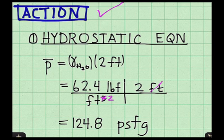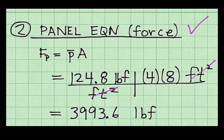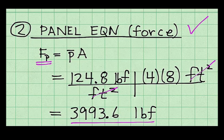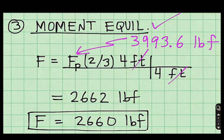So here's my calculations. The hydrostatic equation shows that the pressure at the depth of the centroid is about 125 pounds force per square foot gauge. The panel equation shows that the resultant pressure force acting at the center of pressure is about 4,000 pounds force. Applying moment equilibrium shows that the applied load to hold the panel in place is 2,660 pounds force.